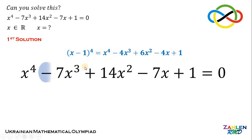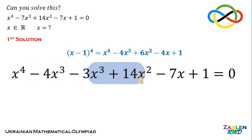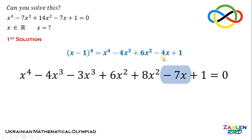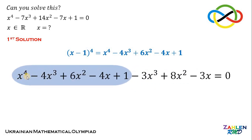To use this expansion, notice that negative 7x cubed can be broken into negative 4x cubed and negative 3x cubed. Similarly, 14x squared can be separated into 6x squared and 8x squared. And negative 7x can be written as negative 4x minus 3x. Rearranging, we get x^4 minus 4x^3 plus 6x^2 minus 4x plus 1, minus 3x^3 plus 8x^2 minus 3x, all equal to 0.